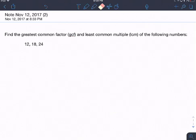Okay, so we are going to go over how to find the greatest common factor and the least common multiple of a set of numbers. So we're going to start with 12, 18, and 24, and we're going to start with GCF.